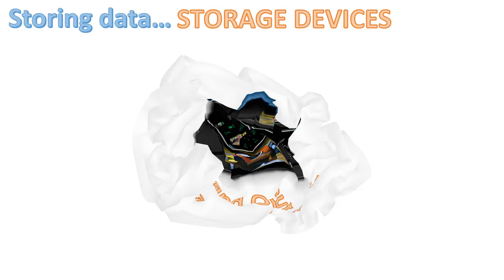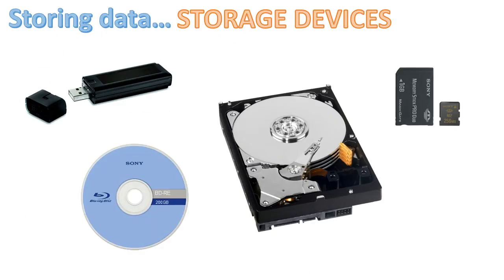Now, what about storing data? There are different types of storage media. The most common is probably the USB pen drive. There's also the hard drive, found in most computers — some are solid state, meaning they're very fast because they have no moving parts. You've also got SD cards used in cameras and phones, and optical media like Blu-ray, DVD, and CDs.